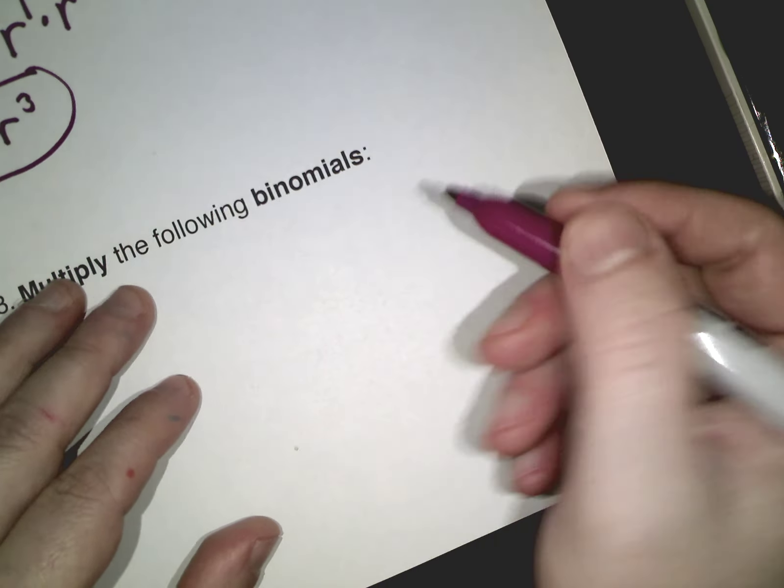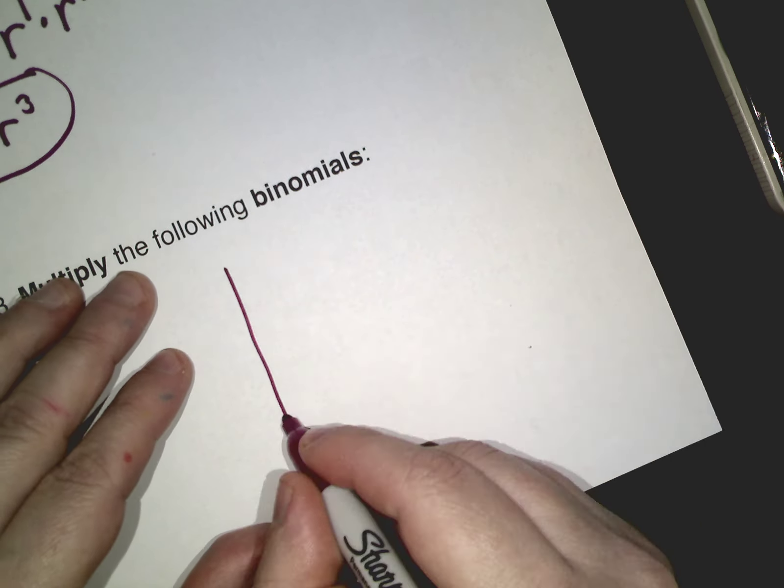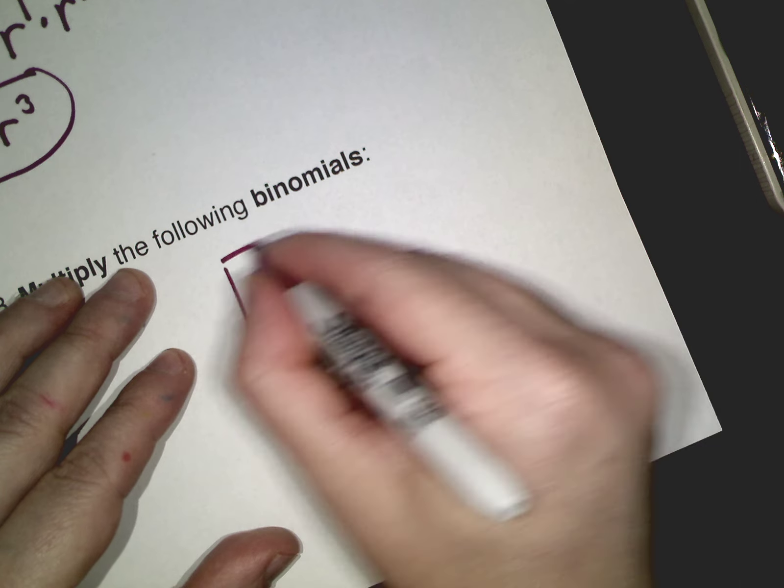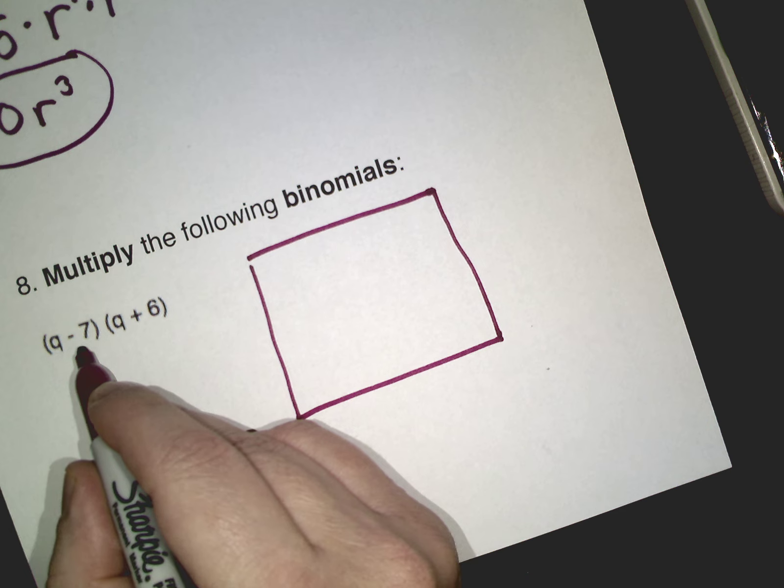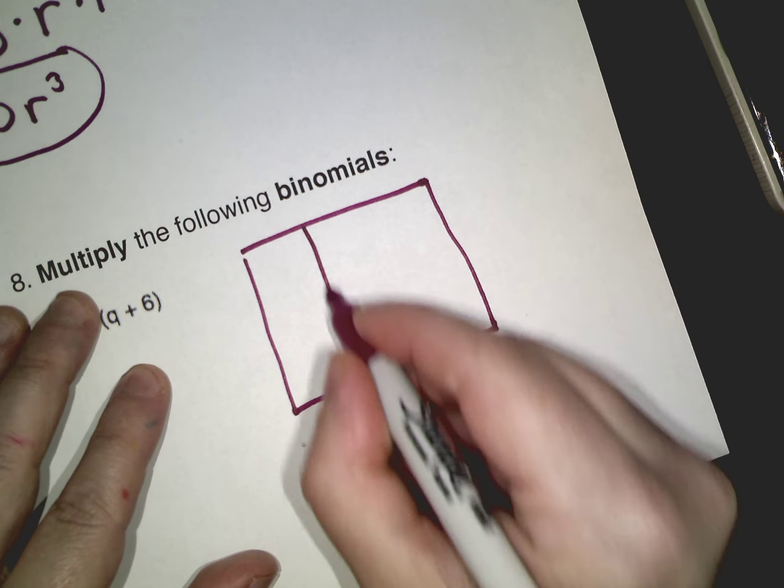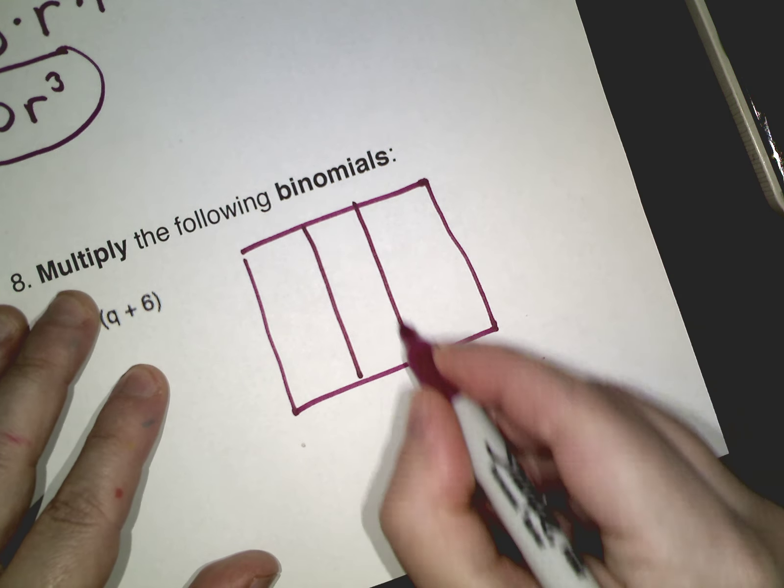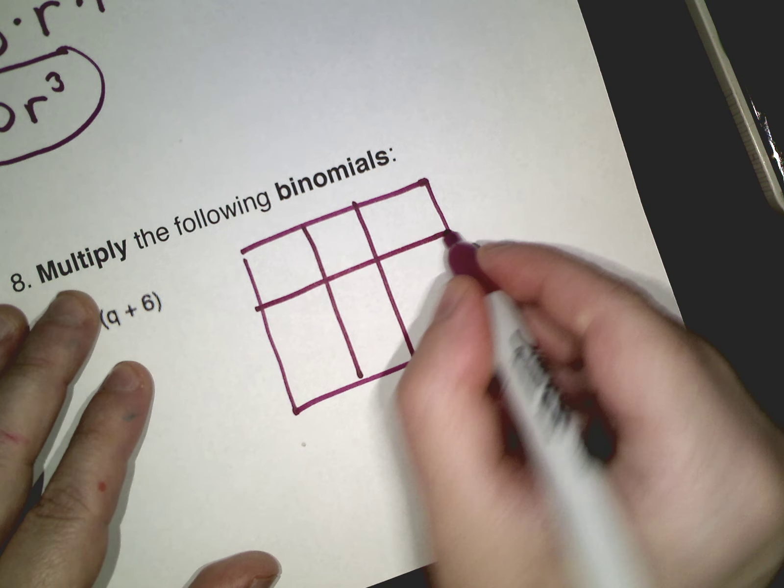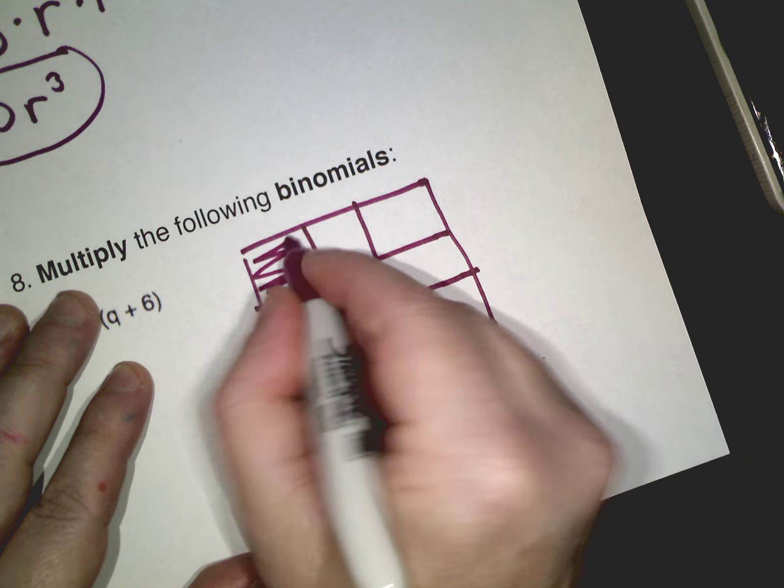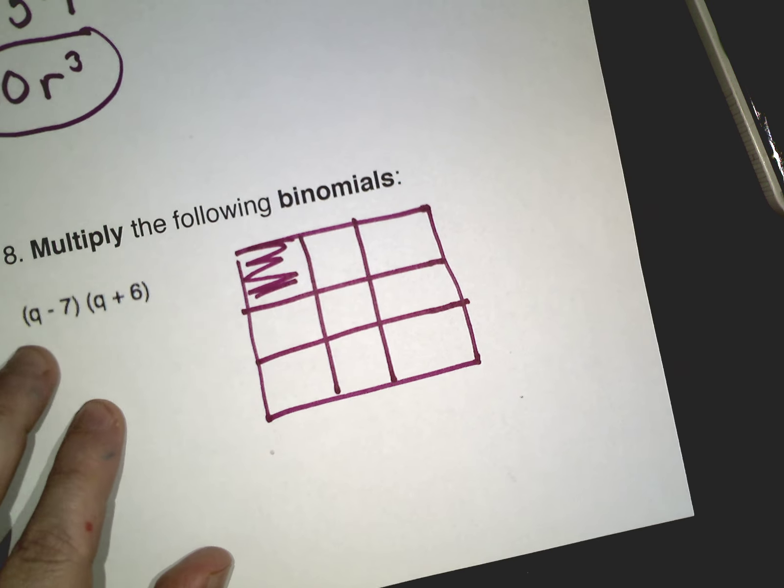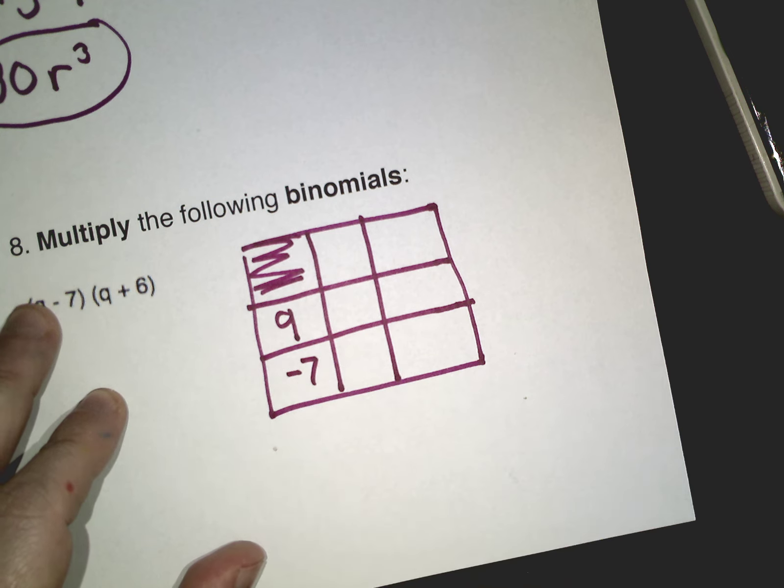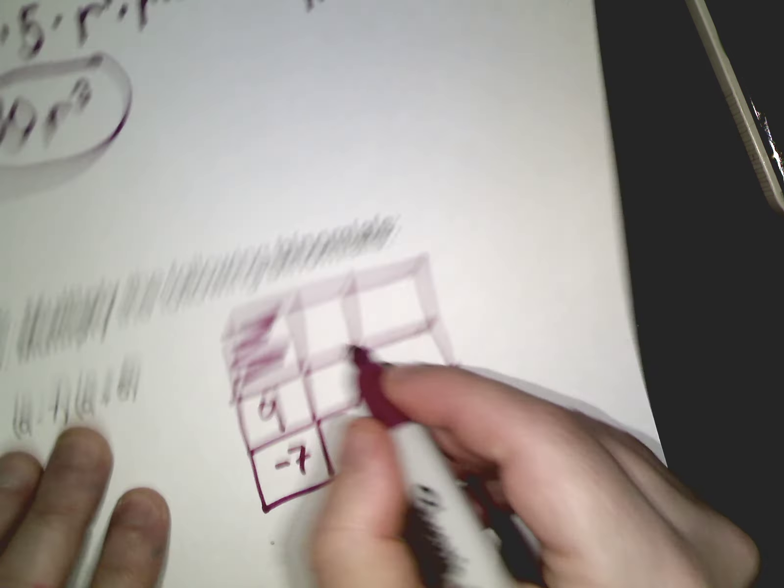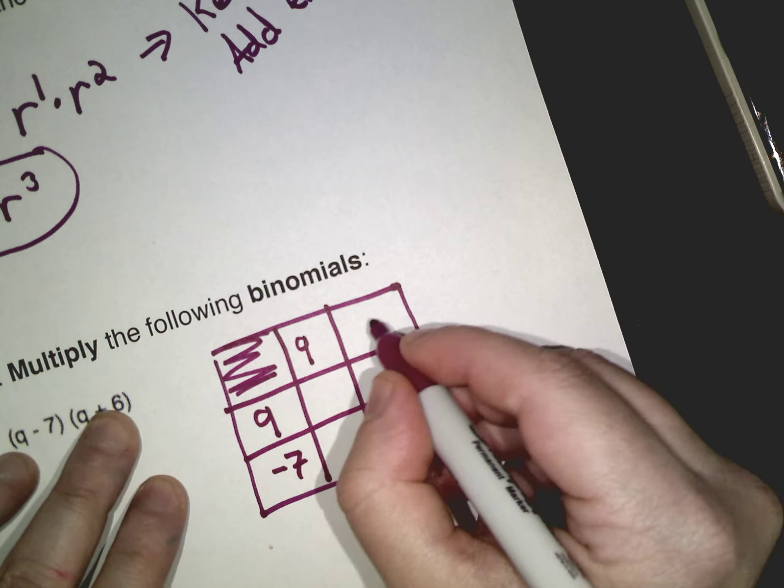Okay, next one, a little bit more work. So it's multiply the following binomials. Box method. Okay, this is a 2 by 2 so I go 1, 2 in this direction and I do 1, 2 in that direction. I always color this side in. This will get one row of q and negative 7 and the other one will get q and plus 6.